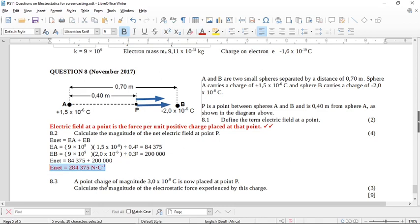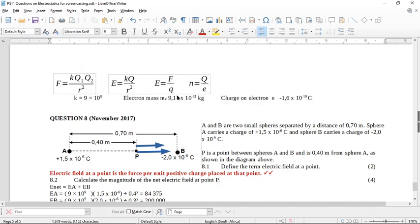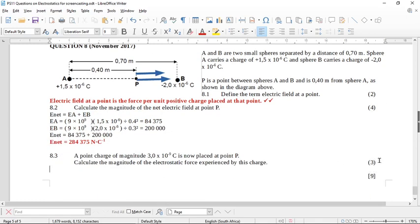Now it says a point charge of magnitude 3 times 10 to the negative 9 is placed at P. Calculate the magnitude of the electrostatic force experienced by this charge. So to calculate this force, the field is the force per unit charge. So we know what the field is if this was one Coulomb. So we're going to substitute into this equation with the value of the charge. So E equals F over Q. We have this value for E from the previous question. So we want to find the force. We don't know the force over what is this charge here, 3 times 10 to the negative 9.